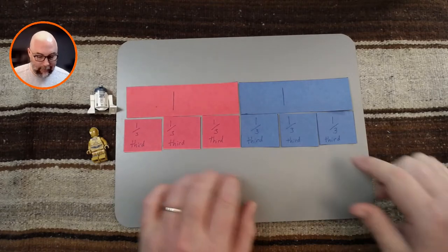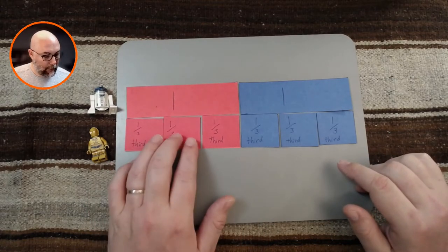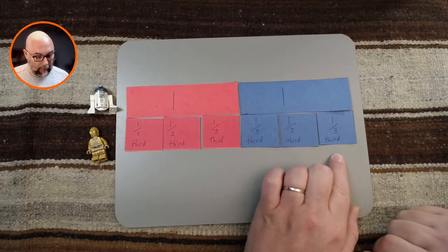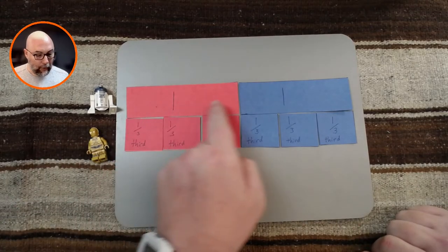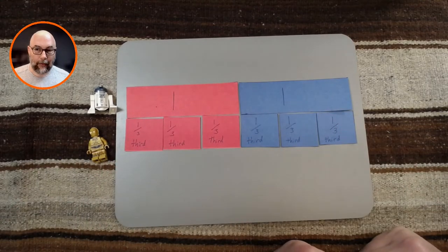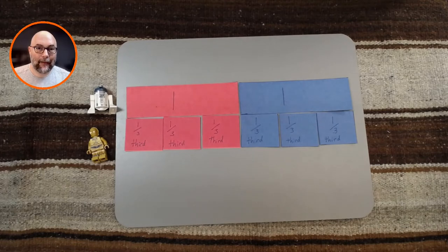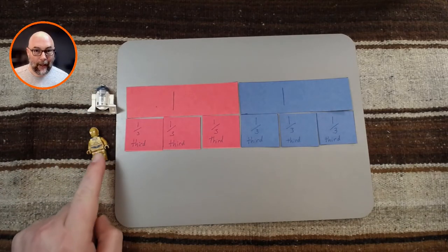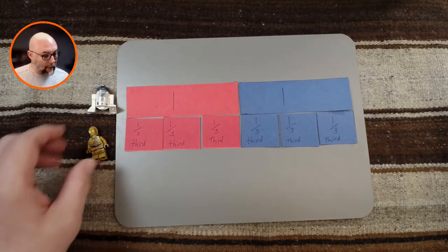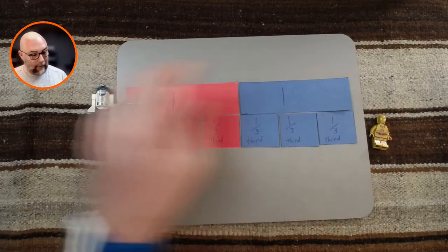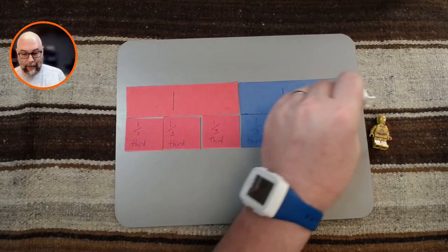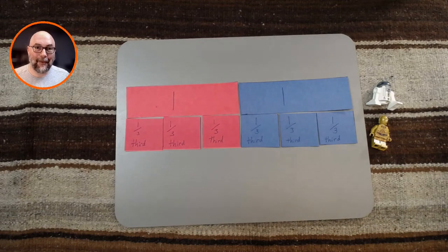Look at that. 6 thirds of a mile is the same length as 2 miles. That means that R2D2 and C3PO traveled exactly the same distance. Pretty cool, huh?